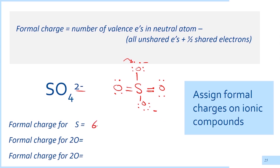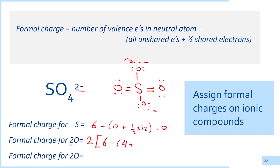Now let's calculate the formal charge for sulfur. Sulfur has six valence electrons minus zero unshared electrons, and half the twelve shared electrons, which equals zero. The formal charge on each of the two doubly bonded oxygen atoms is: six valence electrons minus four unshared electrons, and half of the four shared electrons — one, two, three, four — equals zero.